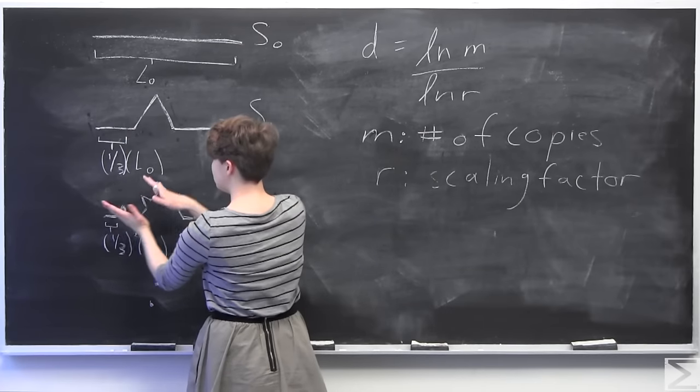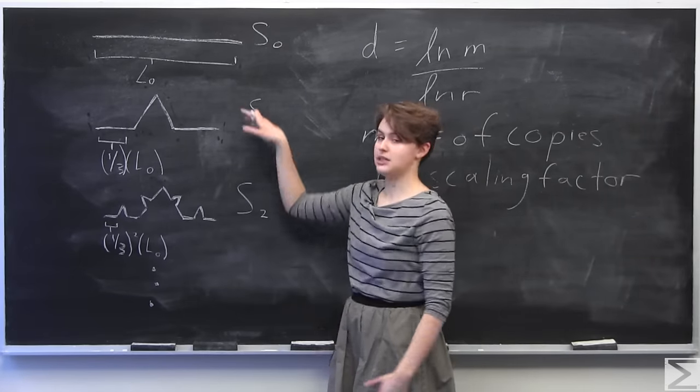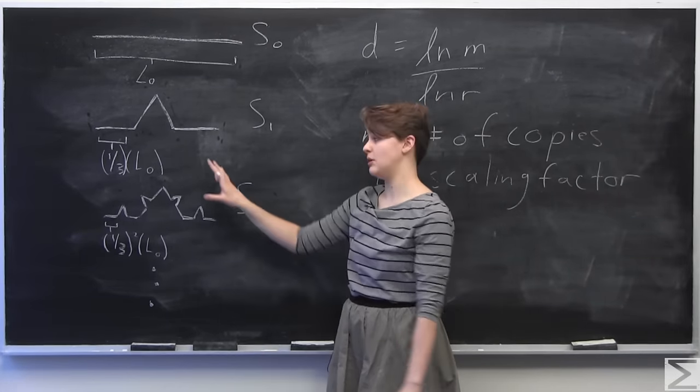We have 1, 2, 3, 4. So in each successive iteration, you're always going to have four copies of the previous one. They'll be scaled down, but they'll be exact copies.